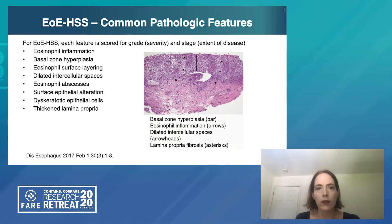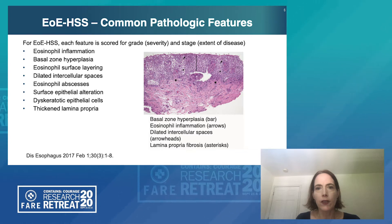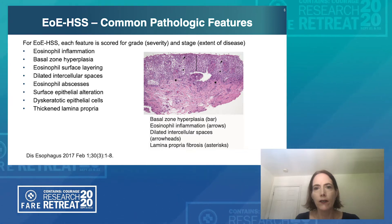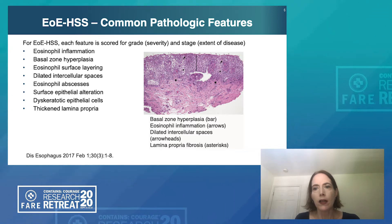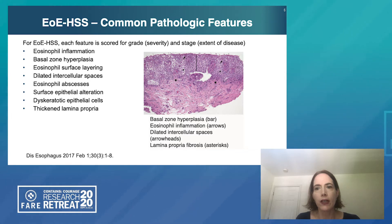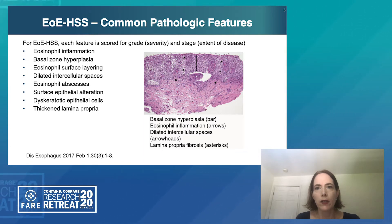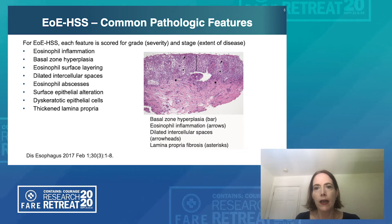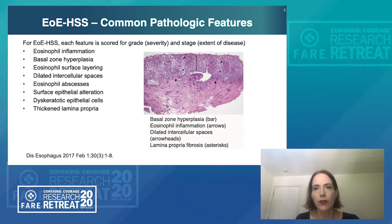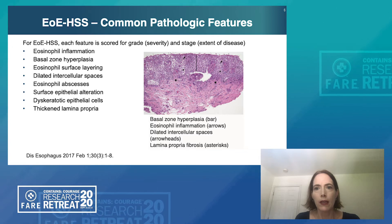On a histologic level, the diagnosis is made by demonstrating at least 15 eosinophils per high power field in the esophageal epithelium. However, there are many other histologic features that characterize eosinophilic esophagitis, and you can see some of these on the microscopic image, such as basal zone hyperplasia represented by the vertical bar, eosinophil inflammation represented by the arrows, dilated intracellular spaces, and lamina propria fibrosis indicated by the asterisks.